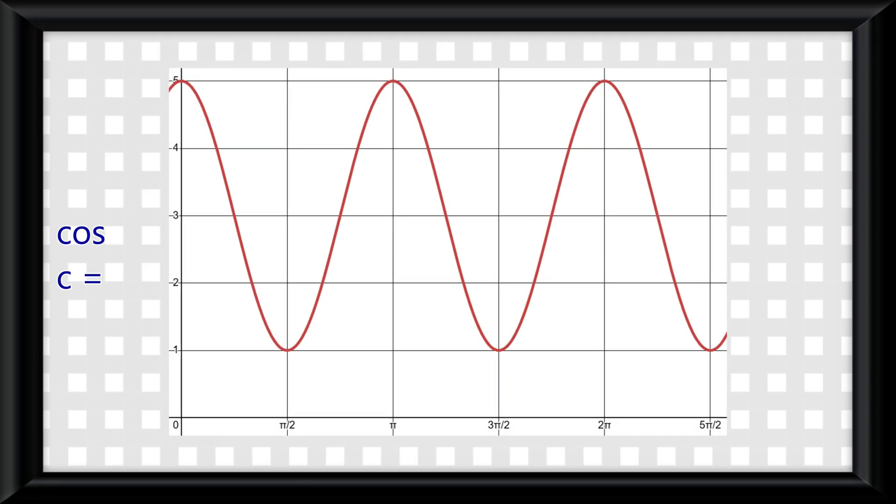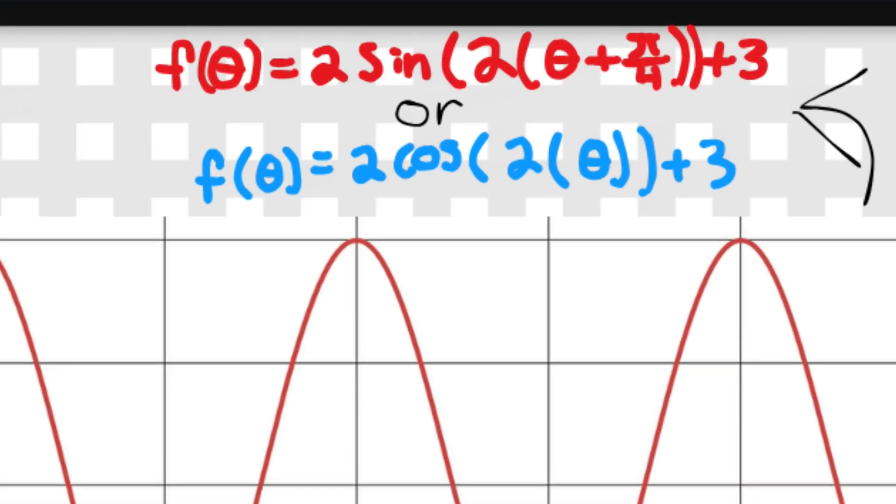We see for cosine, it wouldn't have a phase shift, but for sine, the phase shift would be plus π over 4. And now that you just learned how to do this, practice it.